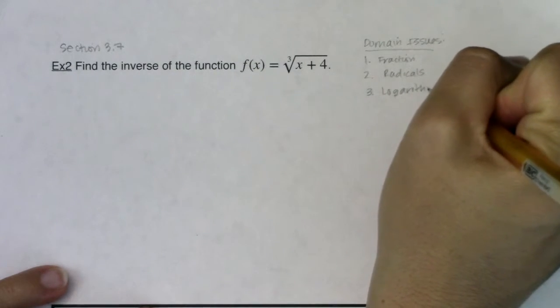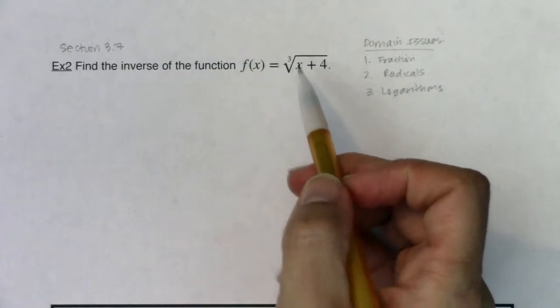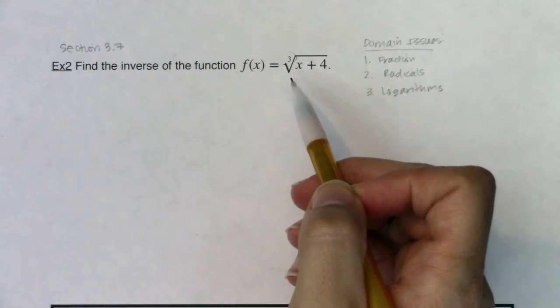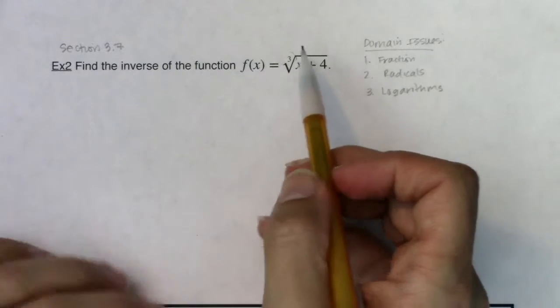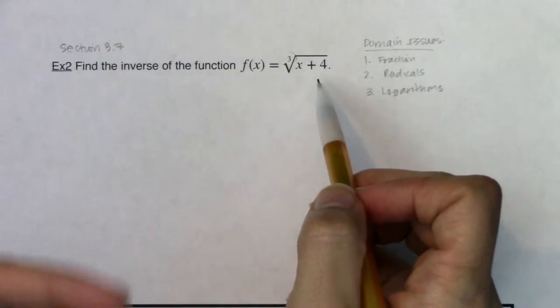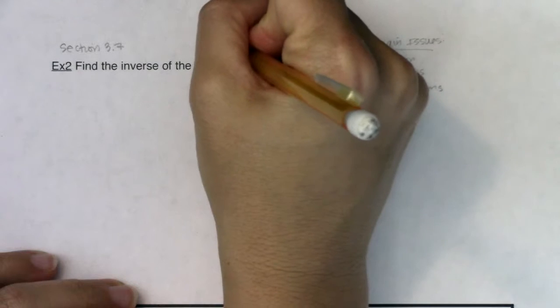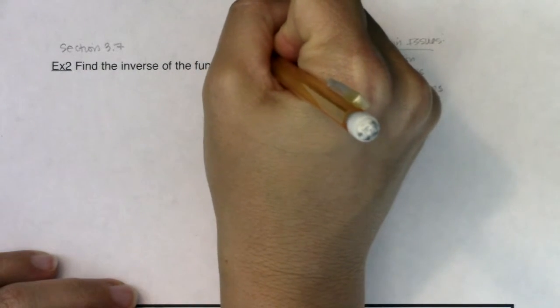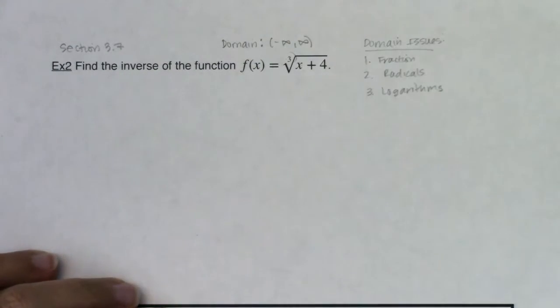Hopefully our spidey senses would go off and you'd say oh I do have a radical here, but the upside is you have a cube root. You don't have a square root or a fourth root, so you're fine. We're allowed to take cube roots of positive and negative numbers and zero for that matter. The domain of this function would stay as all real numbers. There's nothing I need to give the boot to from this domain.